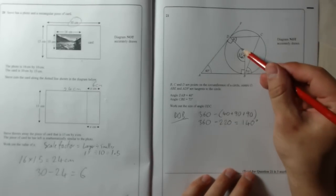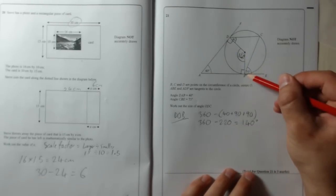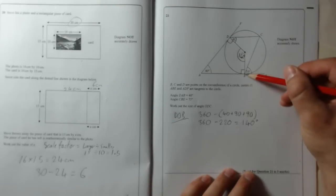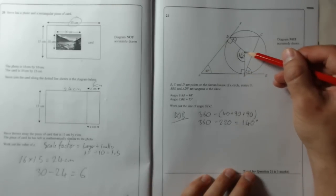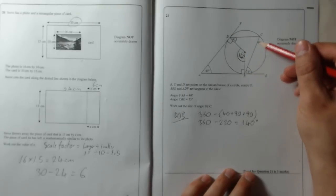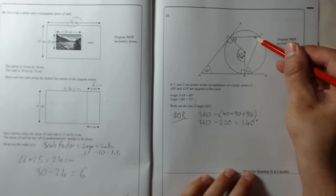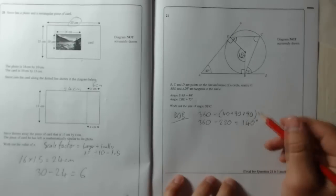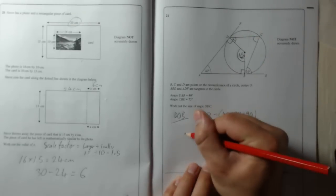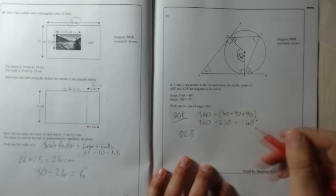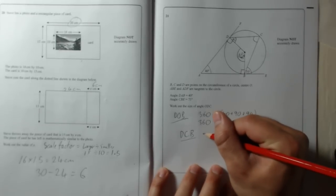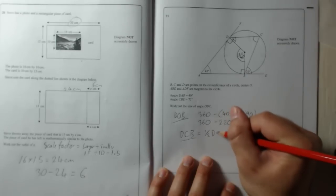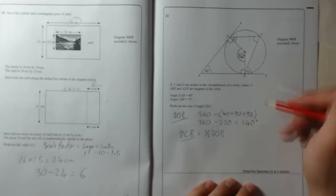Now, because we know this bit here, when you have got two points on the circumference and those two points go to the centre, and from the same two points we can draw lines to the circumference, the angle at the circumference is half of the angle in the centre. So that means DCB is half of DOB. So that one there is 70 degrees.